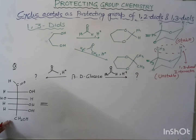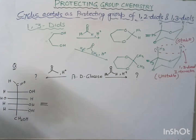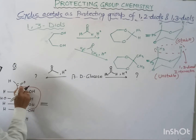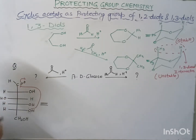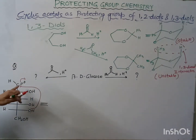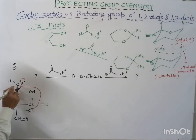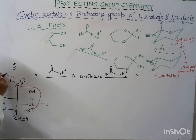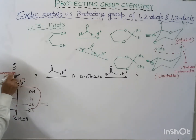The oxygen will attack at the electrophilic center and will be converted to an OH. This carbon is the anomeric carbon — first, second, third, fourth, fifth, and sixth. The first carbon is the anomeric carbon.